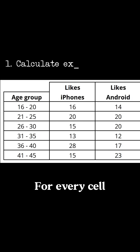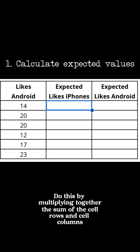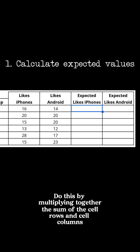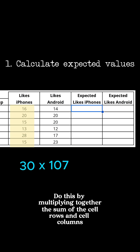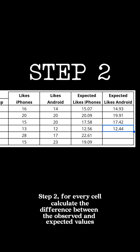Step one: for every cell, calculate the expected values. Do this by multiplying together the sum of the cell's row and cell's column, then dividing that by the total sum of all cells.